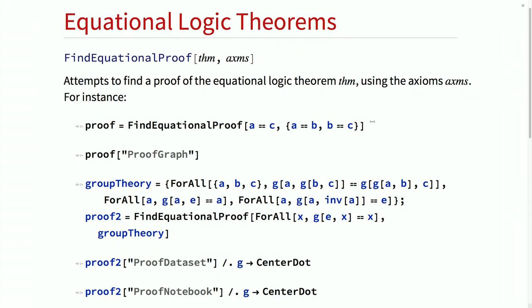For a long time, the Wolfram language has had subterranean theorem-proving functionality behind functions like FullSimplify and Reduce. But more recently, in version 11.3, we released the first serious theorem-proving function called FindEquationalProof, which proves arbitrary theorems in first-order equational logic — a restriction of first-order logic with only universal quantifiers and equality as the only built-in predicate. That's a significant restriction, but it's still sufficient to encode effectively any algebraic theory: group theory, ring theory, loop theory, field theory, universal algebra, Boolean logic.